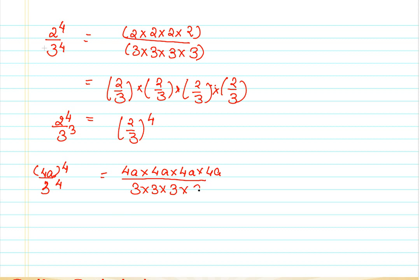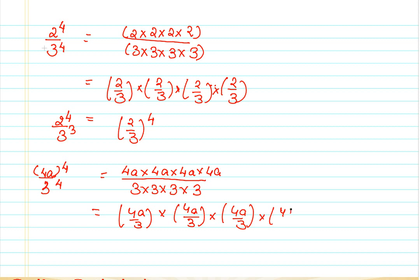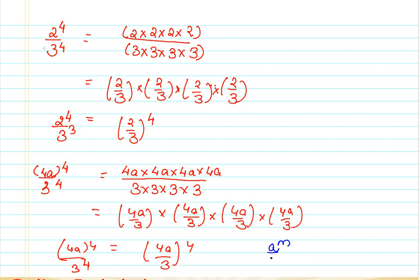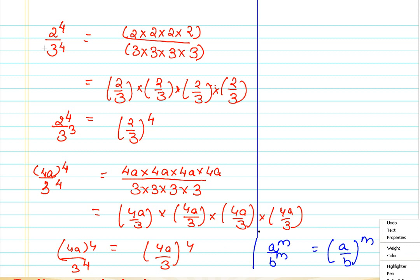I am just expanding it and I can group them here as 4a by 3, then 4a by 3, then 4a by 3, and then you can say it is 4a by 3 raised to 4. To generalize the property: if I have a raised to m divided by b raised to m, then it is a by b raised to m — raised to the power of m. This is the general form of the property.